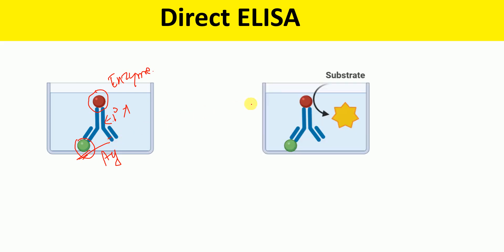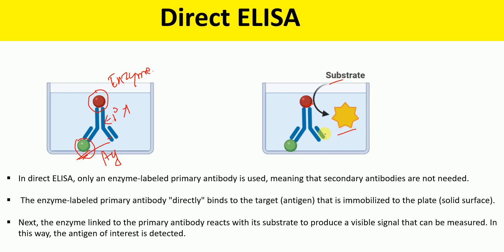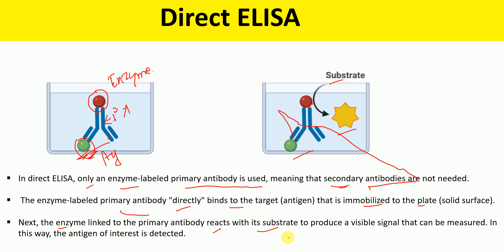In the next step, when the substrate is added, the reaction between the enzyme and the substrate occurs, and that results in the production of some color signal. So in direct ELISA, only an enzyme-labeled primary antibody is used, meaning that secondary antibodies are not needed. The enzyme-labeled primary antibody directly binds to the target antigen that is immobilized to the plate. The enzyme linked to the primary antibody reacts with its substrate to produce a visible signal that can be measured.